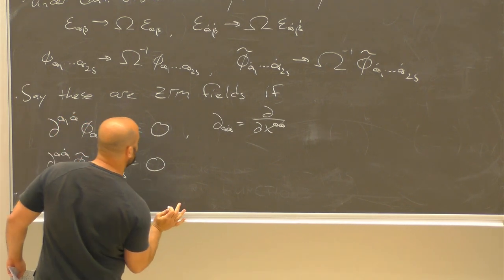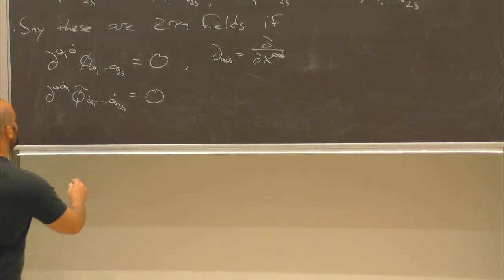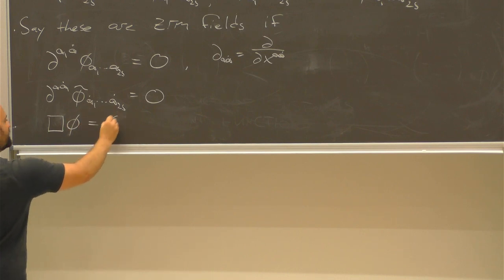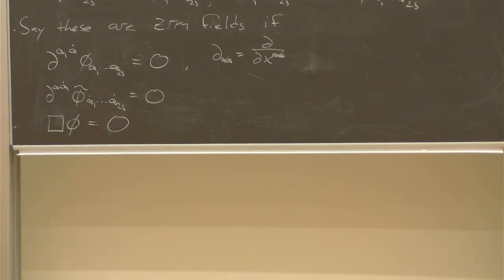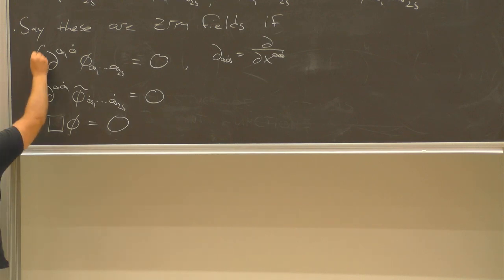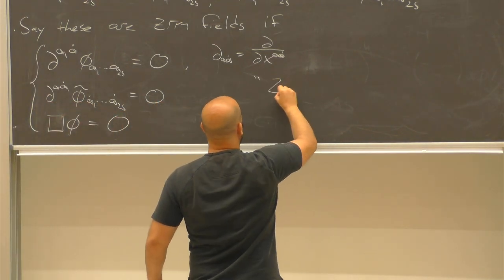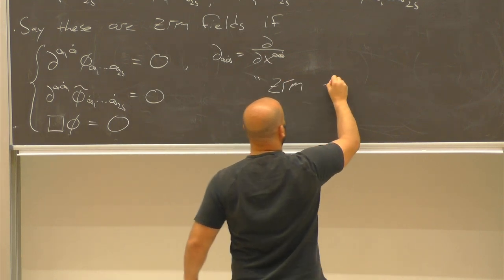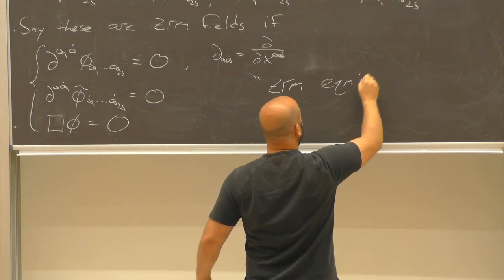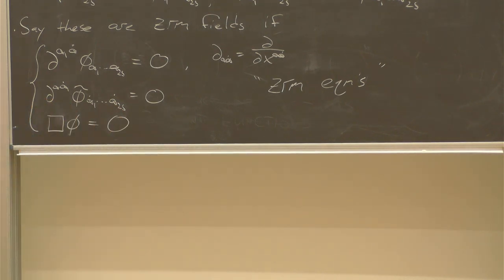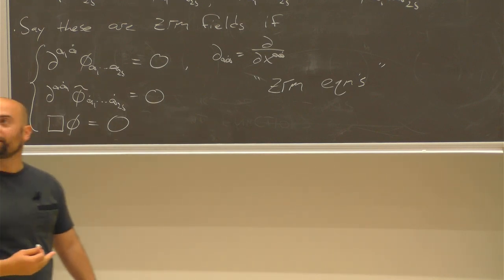In the case where S is equal to zero, we just ask that the field satisfies the massless scalar wave equation. So these are the zero rest mass equations and fields: totally symmetric spinor fields that are conformal densities of weight minus one, which satisfy these equations, are zero rest mass fields.